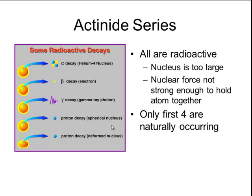The actinide series is found in period 7 of the periodic table, and all of these elements are radioactive. The reason they are radioactive is because their nucleus is too large — they have too many protons and neutrons packed into a tiny space that the strong nuclear force is not strong enough to hold the element together, and so the nucleus begins to fall apart or decay. There are many different types of radioactive decay, including alpha particles, beta particles, and gamma particles.